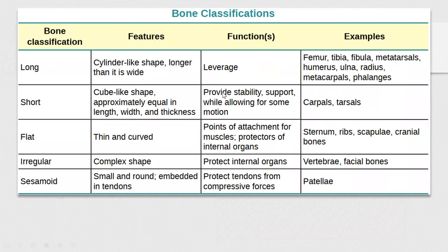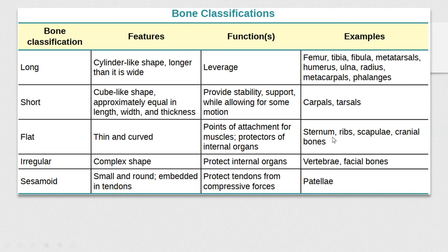The next slide gives features, function, and examples. Long bones provide leverage since muscles are attached and move those long bones. Short bones provide stability and support while allowing for some motion. Flat bones serve as points of attachment for muscles and protect internal organs. Irregular bones also serve as protectors. Sesamoid bones, because they form within tendons, protect tendons from compressive forces. Examples: sesamoid — patella; irregular — vertebra, some facial bones; flat — sternum, ribs, scapula, cranial bones; short — carpals and tarsals; long — femur, tibia, fibula, metatarsals, humerus, ulna, radius, metacarpals, phalanges.